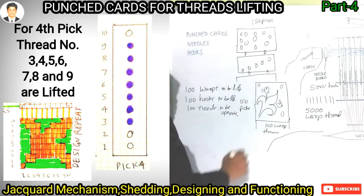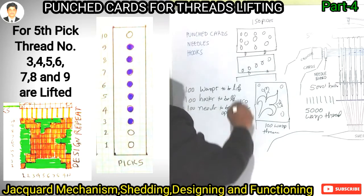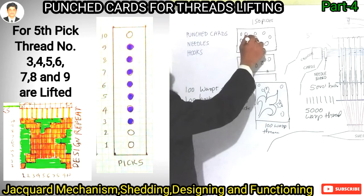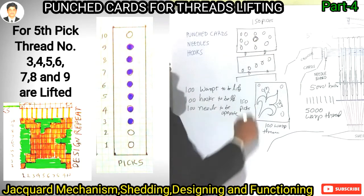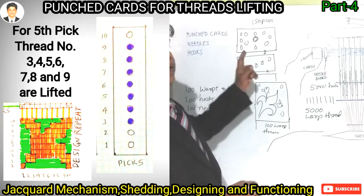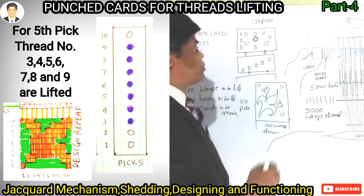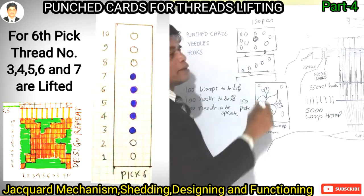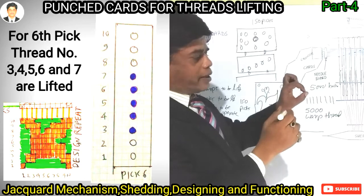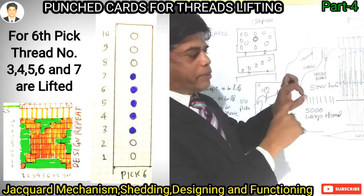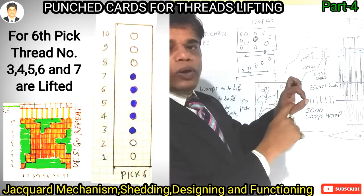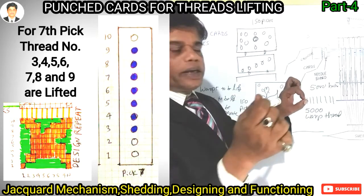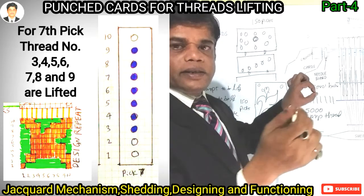Different cards will be there for each pick. The punch means these are holes. The hole size — one needle will go and insert through the hole. This is a hole on the punch card, and this is a needle.